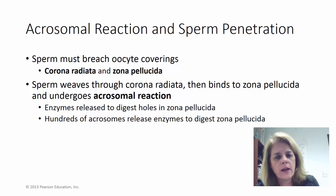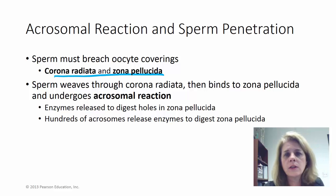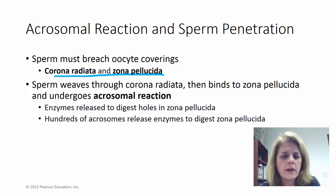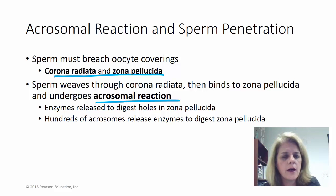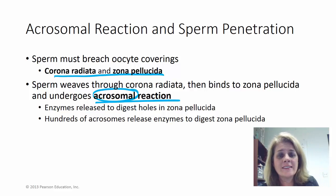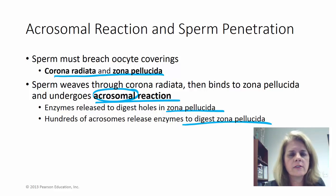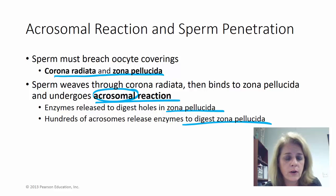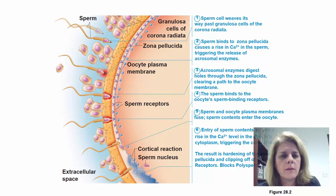When sperm reaches the oocyte, it has to get through the corona radiata and zona pellucida. The sperm weaves through the corona radiata, binds to the zona pellucida, which causes a rise in calcium levels in the sperm, triggering the acrosomal reaction — releasing enzymes that digest the zona pellucida. It takes hundreds of sperm releasing those enzymes to break down the zona pellucida enough for one sperm to get through. There are great YouTube animations showing this process.